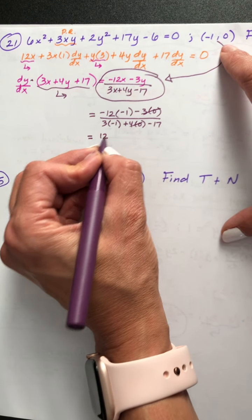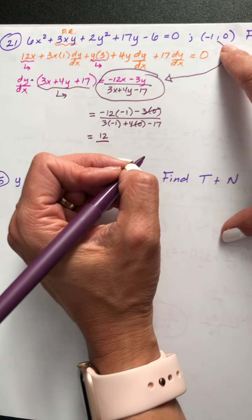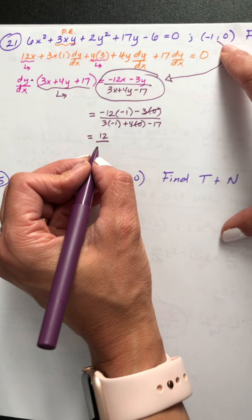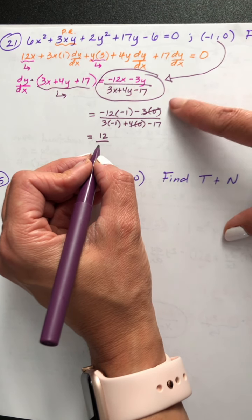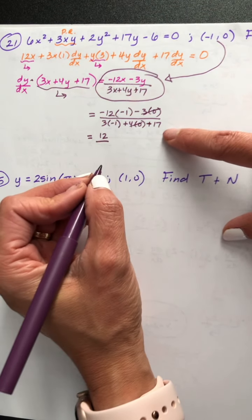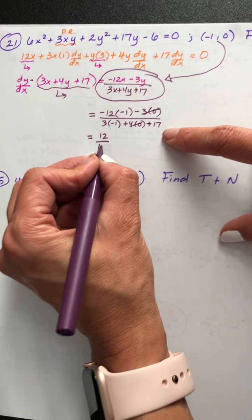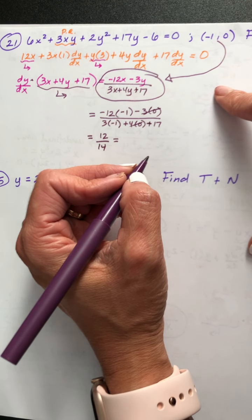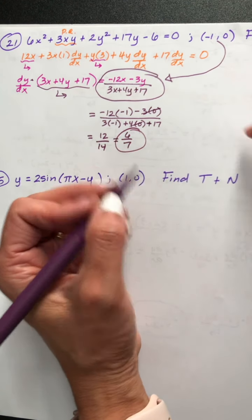Negative 12 times negative 1 is positive 12. 3 times negative 1 is negative 3. Wait — that was a plus 17, not minus. So negative 3 plus 17 is 14. When we reduce by 2: 12 divided by 2 is 6, 14 divided by 2 is 7. So there is our slope, 6 sevenths.